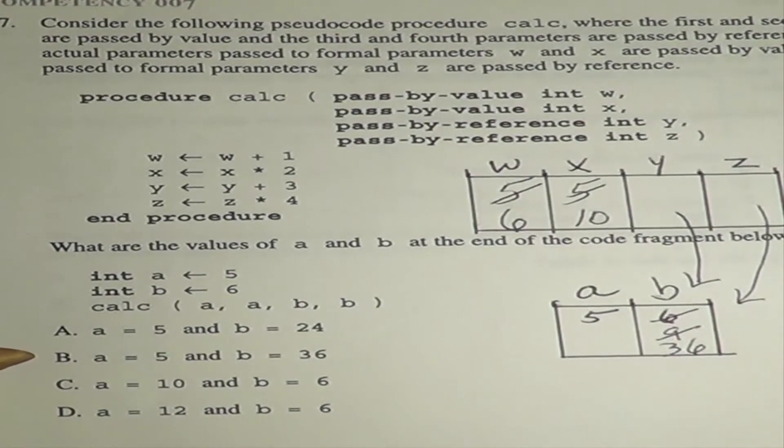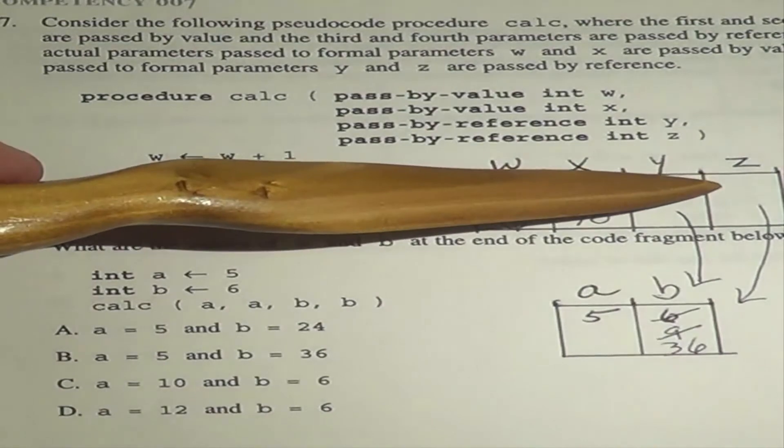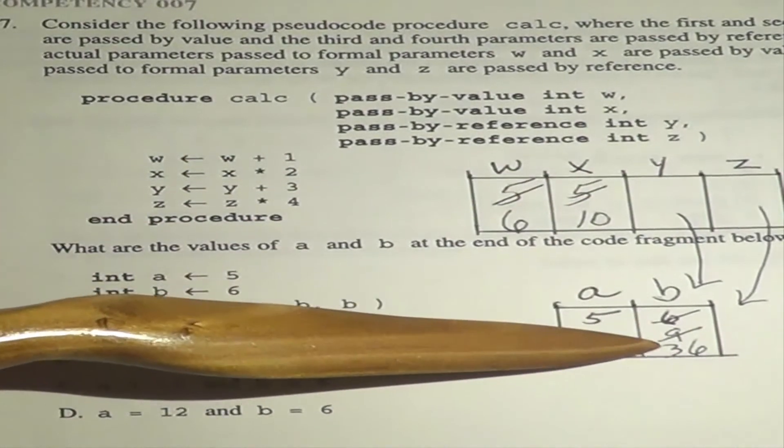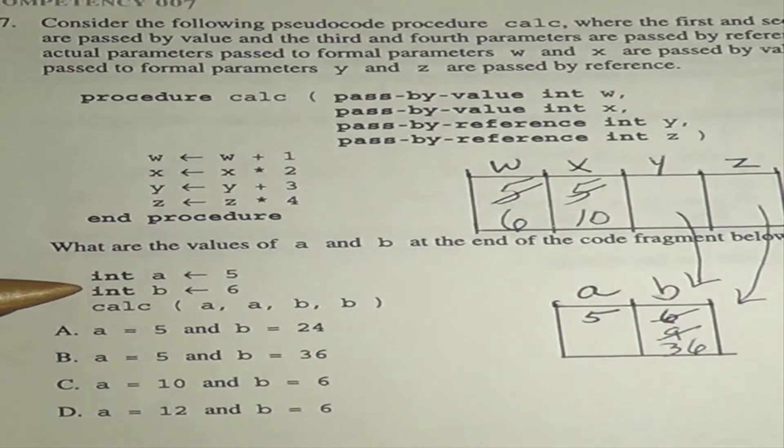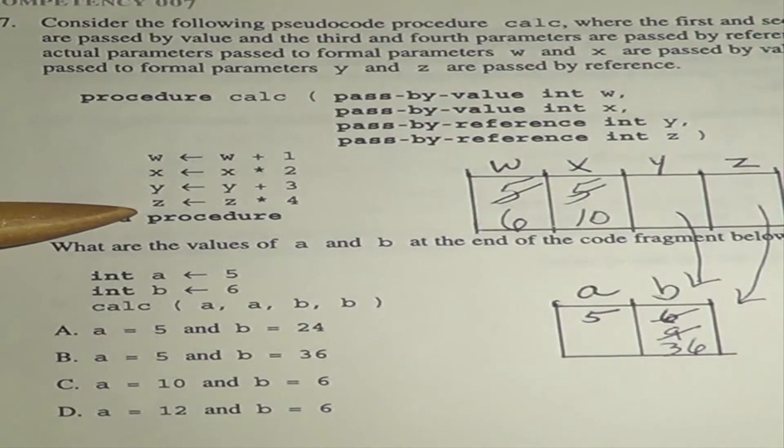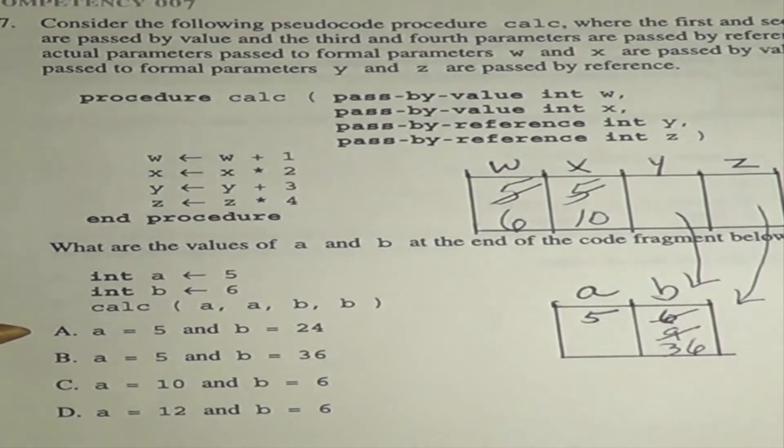Now, the common mistake here is to forget that Z is pointing to this value. And so, some will think that that's still a 6. And multiply the 6 times the 4 to get 24, which would be A.